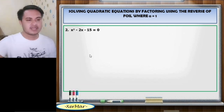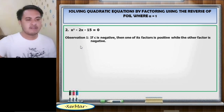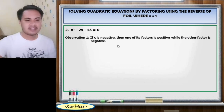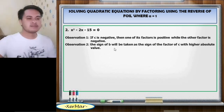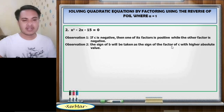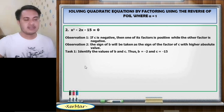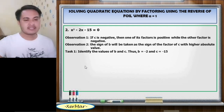Number 2: x squared minus 2x minus 15 equals 0. Observation 1: If c is negative, then one of its factors is positive while the other factor is negative. Observation 2: The sign of b will be taken as the sign of the factor of c with higher absolute value. Thus, b equals negative 2 and c equals negative 15.